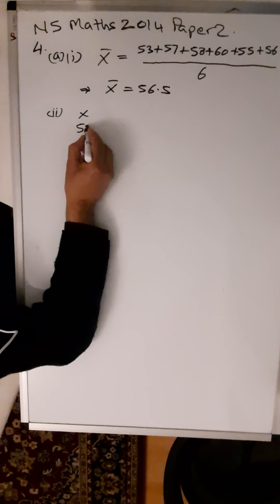Basically, square all the results that you're getting in your second column. Taking 56.5 away from 53 gives you -3.5. Taking that away from 57 gives you 0.5. Taking it away from 58 gives you 1.5. Taking 56.5 away from 60 gives you 3.5. Taking it away from 55 gives you -1.5.